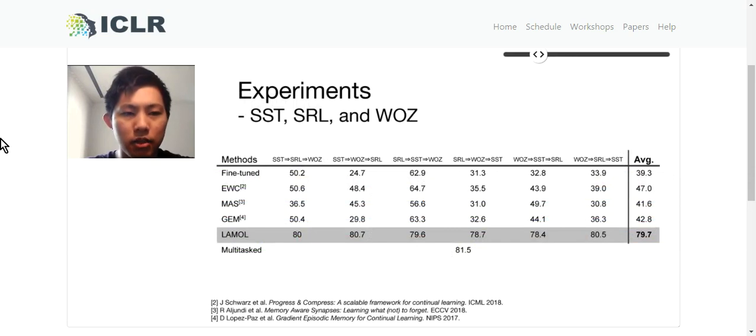Here is the experiment on three datasets: SST, SRL, and WOZ. We compared our method with previous state-of-the-art methods EWC, MAS, GEM on all six orders and take the average of it. We can see that LAMOL greatly outperforms previous state-of-the-art methods. Also, the performance of our method is quite close to that of multi-task, which in this case is considered as an upper bound.